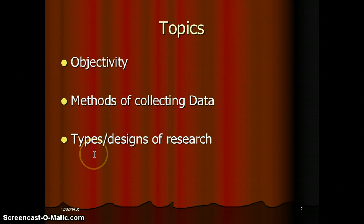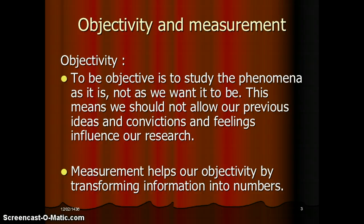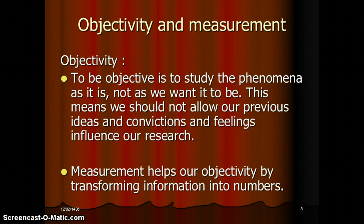Objectivity and measurement: to be objective is to study the phenomenon as it is and not as we want it to be. This means we should not allow our previous ideas, convictions, and feelings to influence our research. So to be unbiased — don't be biased. If you like someone or something, don't give them extra marks, because you need to be more objective.